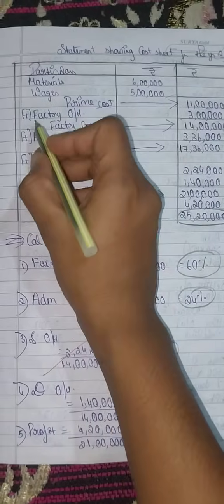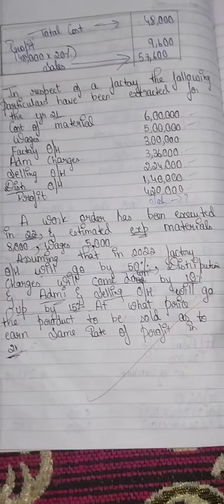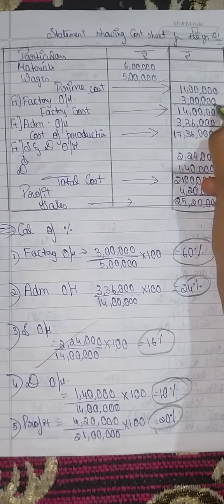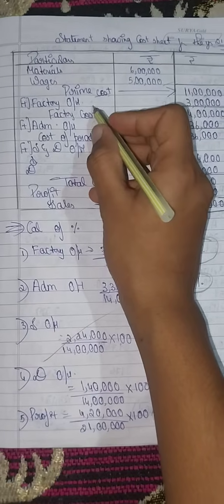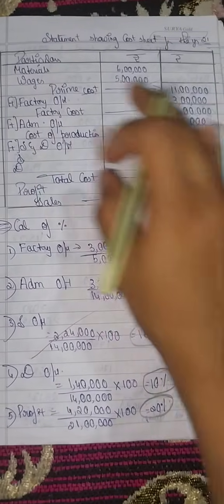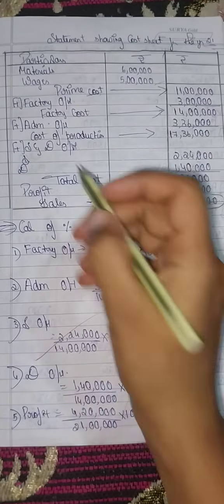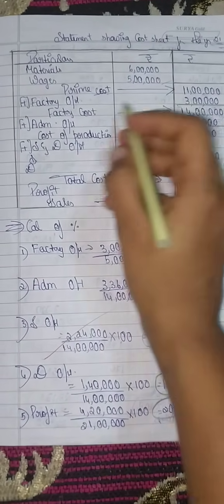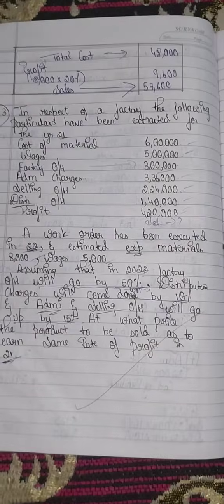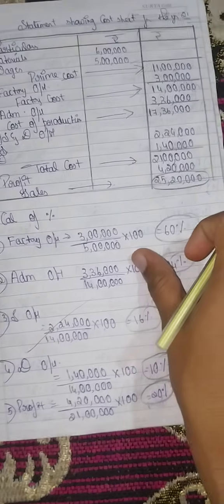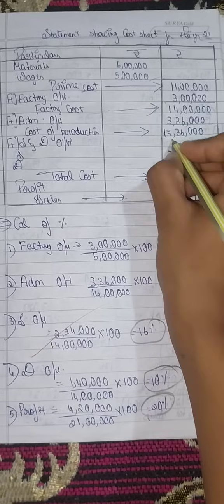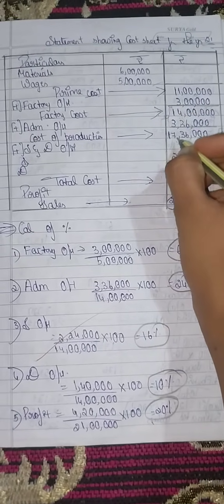Next, we add factory overhead to the prime cost. Factory overhead is 3 lakh, so 11 lakh plus 3 lakh equals 14 lakh — this is the factory cost or work cost. Then we add administration overhead. Administration charges are 3 lakh 36,000, so the cost of production is 14 lakh plus 3,36,000 equals 17 lakh 36,000.